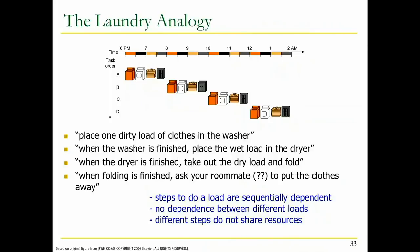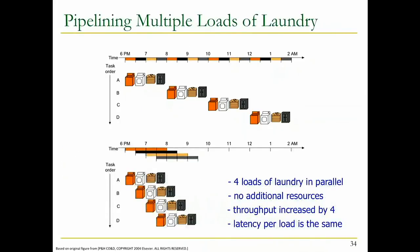As a result you can perfectly pipeline this. Once the first load finishes in the washer you put it into the dryer, but you also start the second load in the washer. You do four loads of laundry in parallel in the steady state. No additional resources are needed, throughput is increased by four, and you have the rest of your evening to enjoy - or study computer architecture, which is what 'enjoy' means.